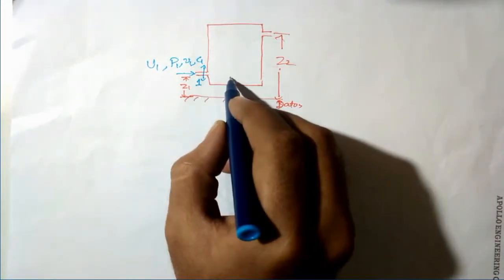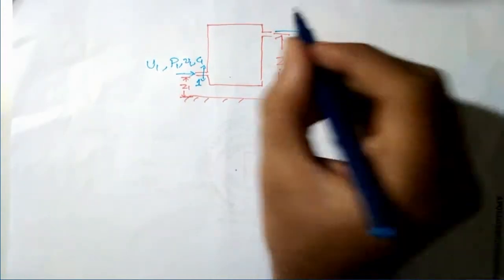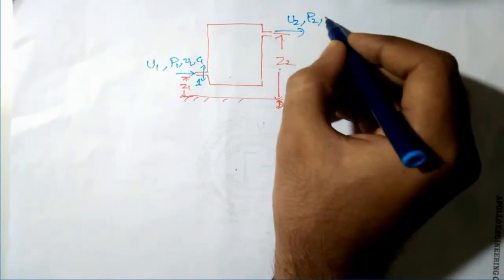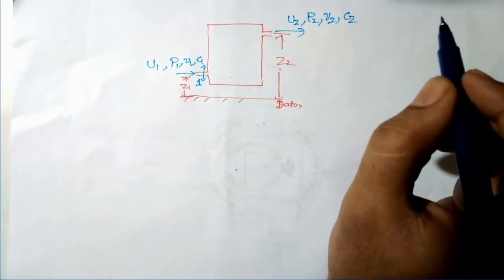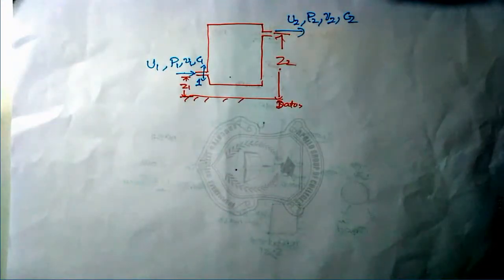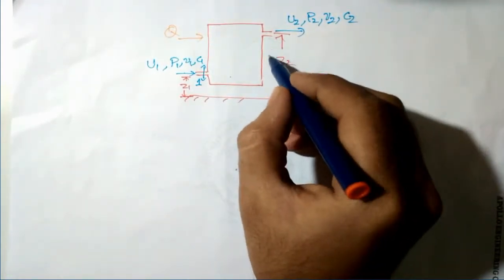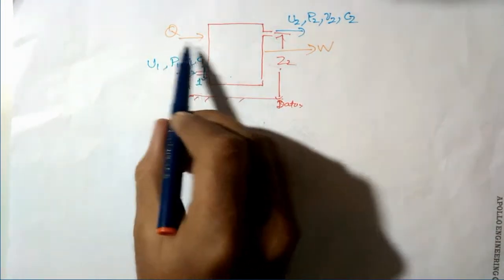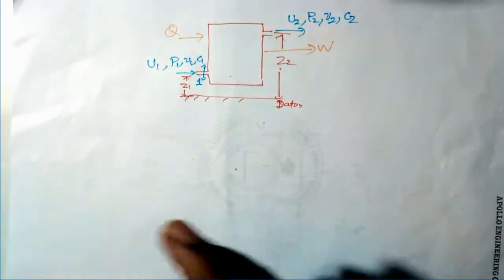After entering the system, the fluid comes out with internal energy U2, pressure P2, specific volume V2, and velocity C2. Some heat energy is supplied to the system and work output is taken out of the system.